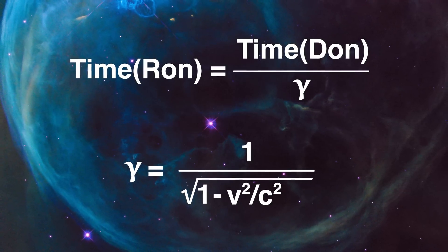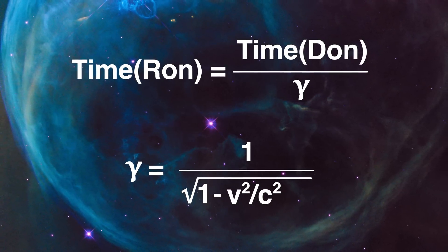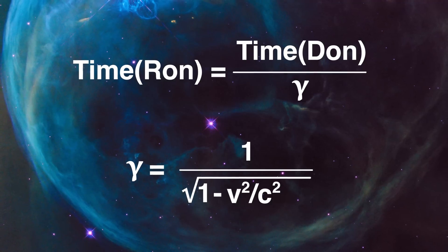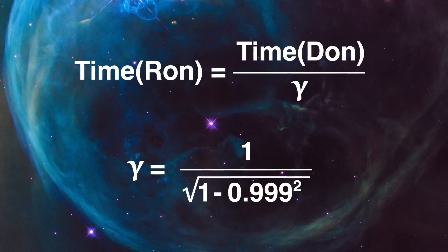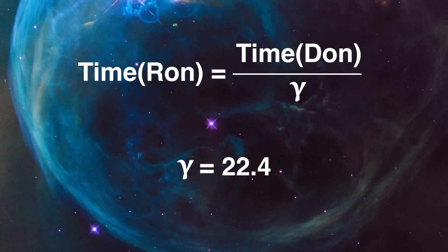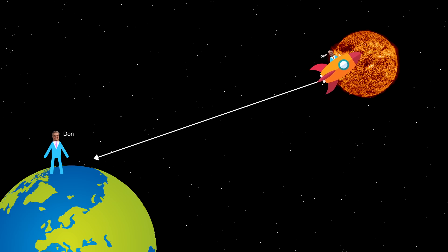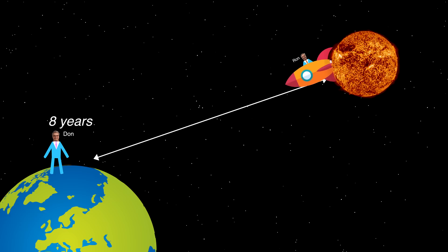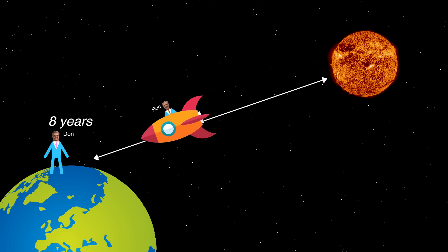If Ron is traveling at 99.9% the speed of light, then v over c is 0.999. Substituting that in, you get a gamma of about 22.4. And finally, what you find is that while Don experiences eight years for the round trip, Ron experiences just a bit over four months.